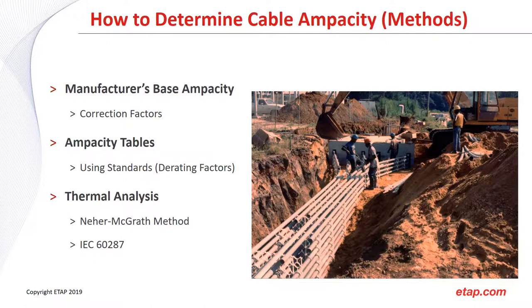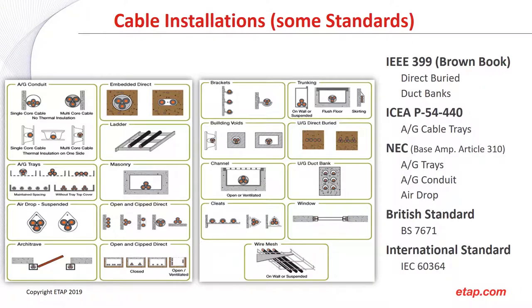As a quick review, we've covered two methods to determine cable ampacity in previous presentations: first, manufacturer-based ampacity using correction factors — typically per IEEE 399, or the 'brown book' — and second, ampacity tables using standard rating factors, as provided in NEC tables. The third item we'll cover now is the thermal analysis method — specifically the Neher-McGrath method as well as IEC 60287. This is the focus of Part 3.